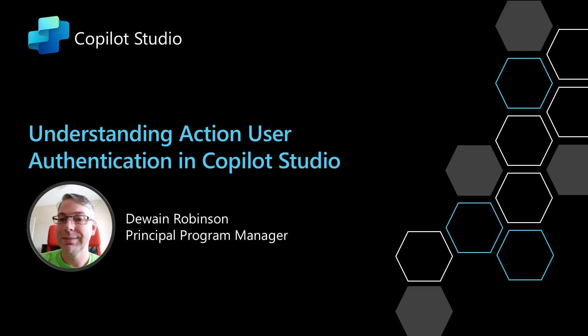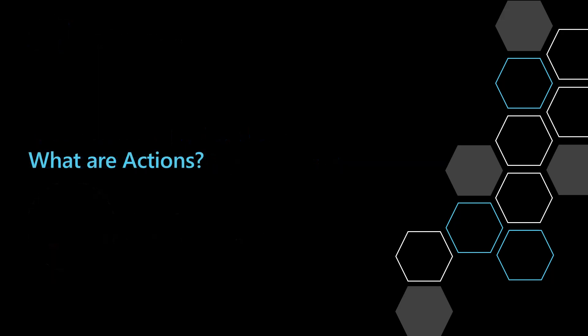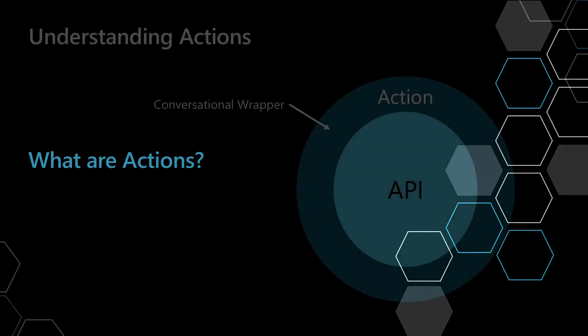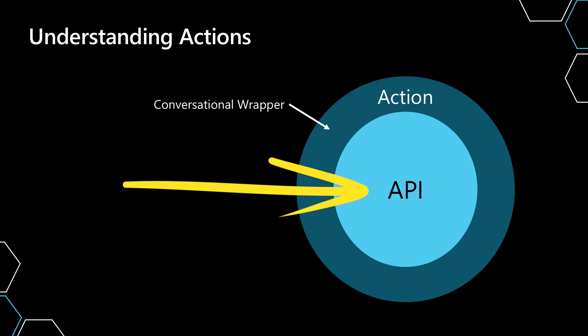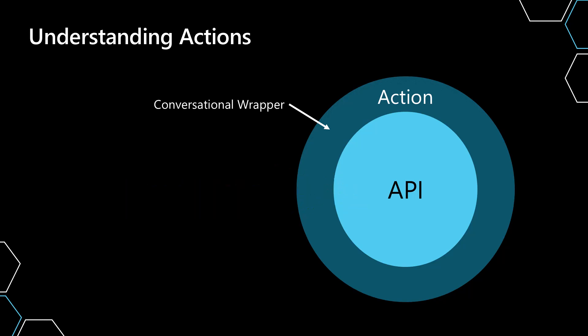In this video, I'm going to go over how to use user authentication in actions and what that actually means. Let's first understand what an action is in Copilot Studio. An action is really just an API or a connector that allows you to put a conversational wrapper around it, so you can talk to the API in a conversational manner.